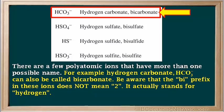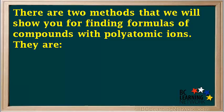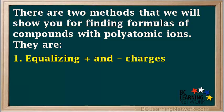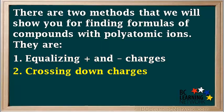Like binary ionic compounds, there are two methods for finding formulas for compounds with polyatomic ions. They are: number one, equalizing positive and negative charges; and number two, crossing down the charges. Let's do an example using the first method.